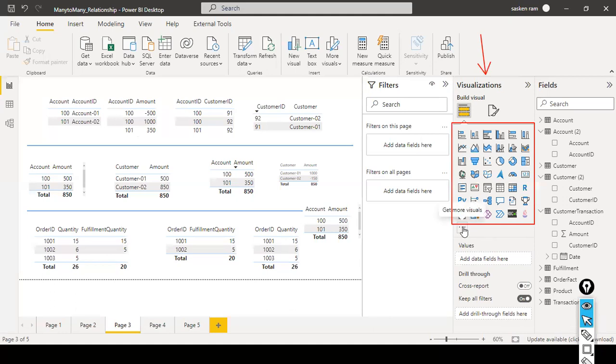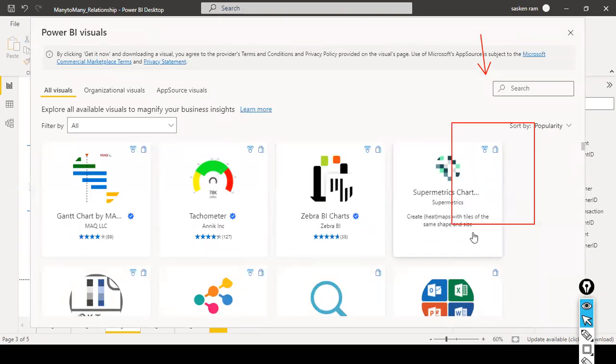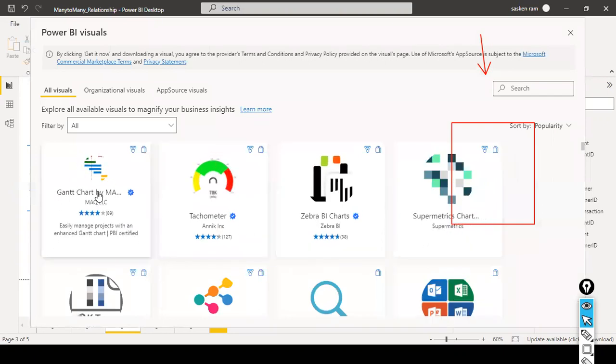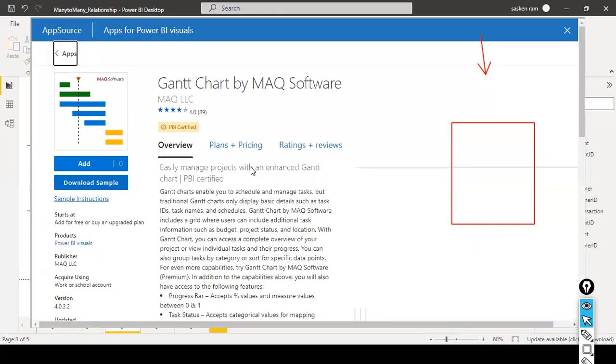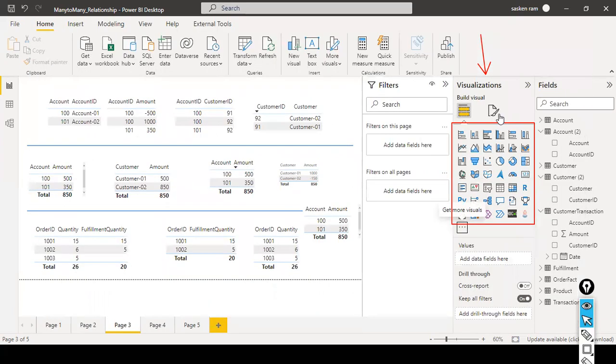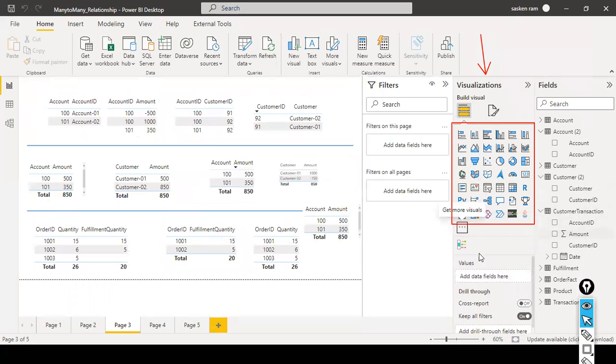Apart from this, if you wanted to use any custom visuals, you can click on these three dots, get more visuals. You can get some third party charts here. For example, I want to use Gantt chart. I click on it. Gantt chart is not available by default. But your management wants to use the Gantt chart to track the project progress. So you can simply click on that. It will get included as part of your visualization here. Import successful. Look here, Gantt chart by MEQ software, it got included here.